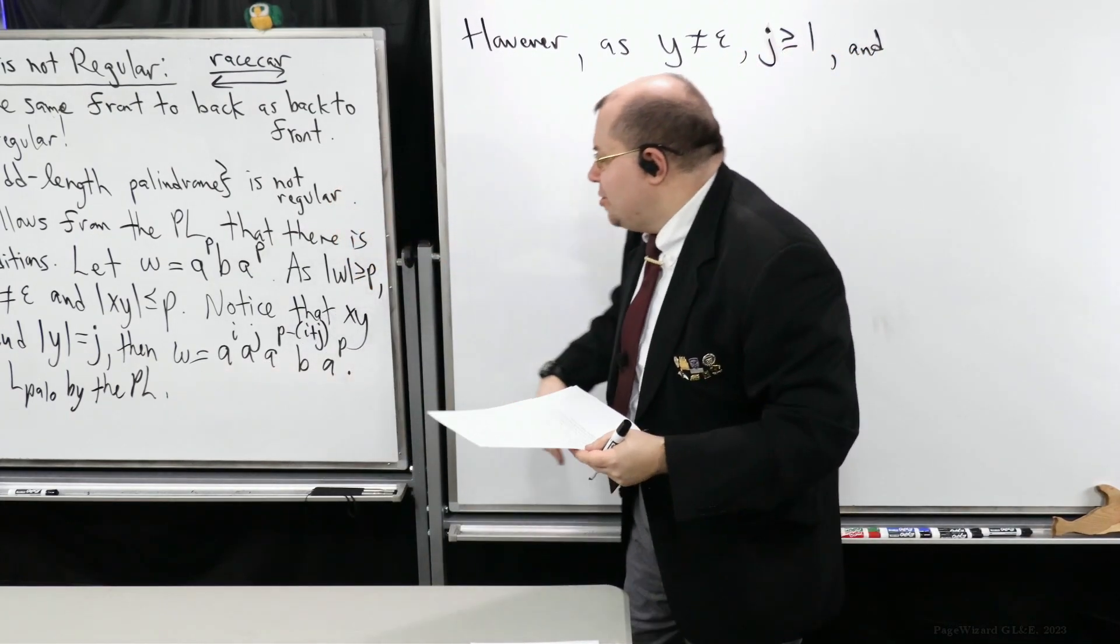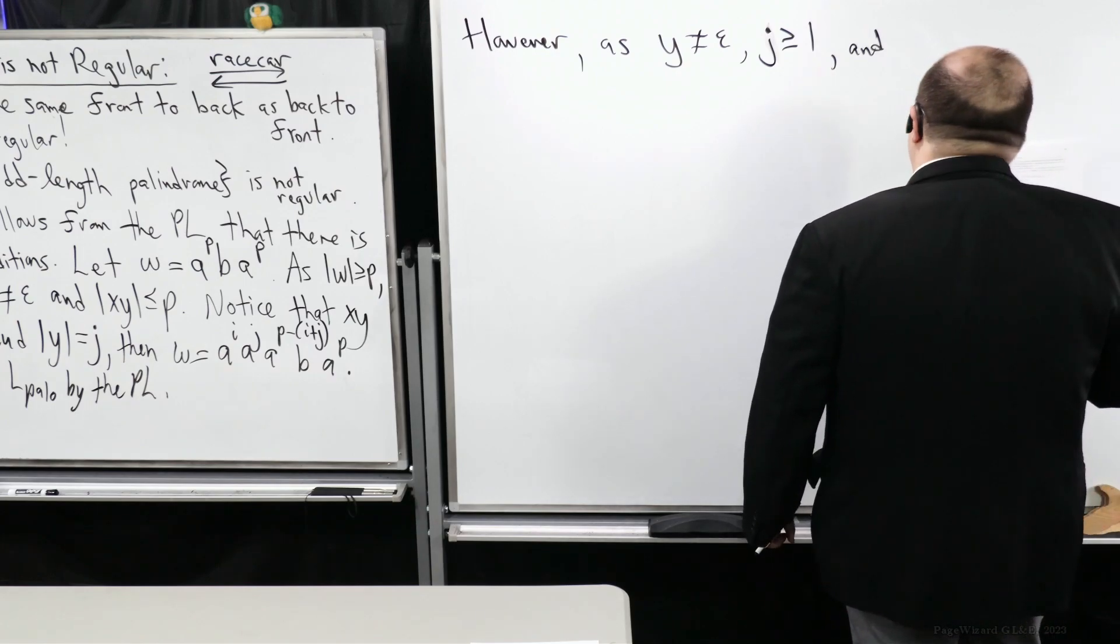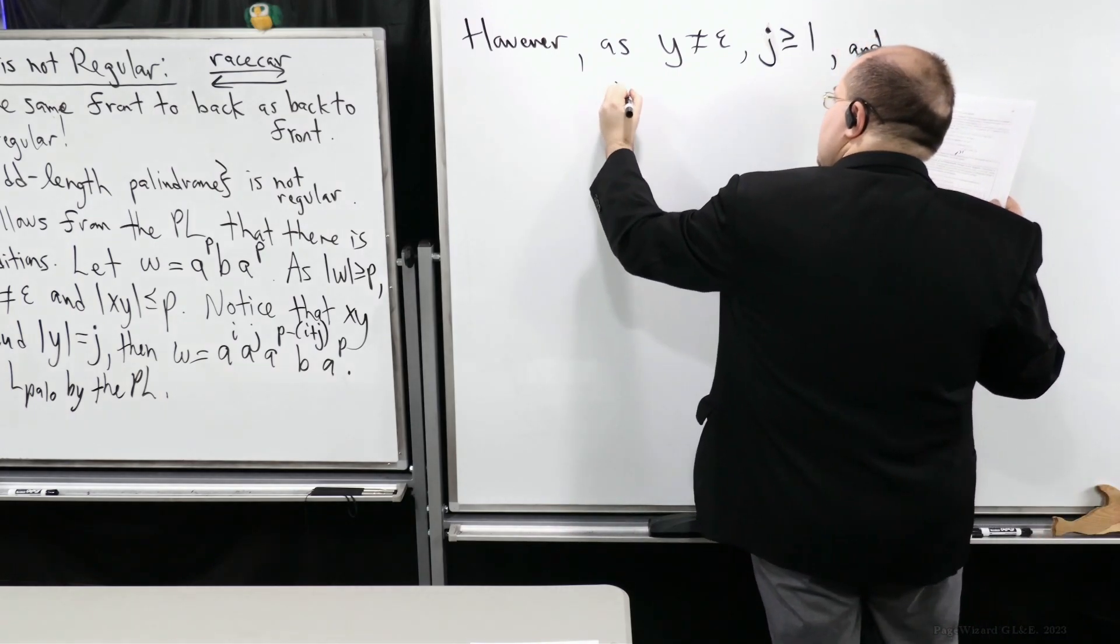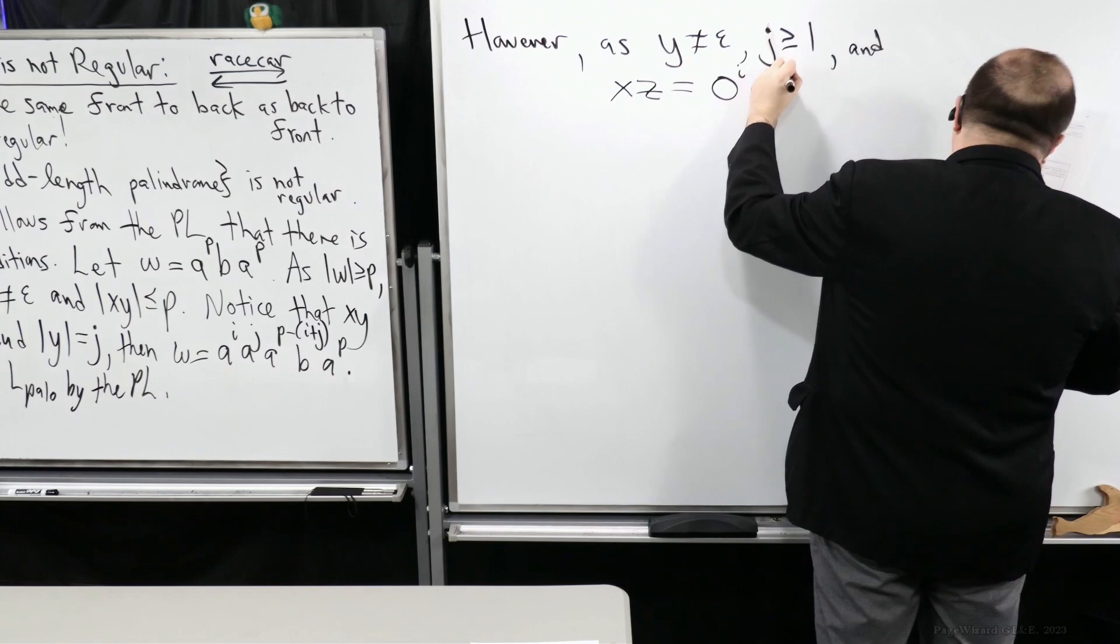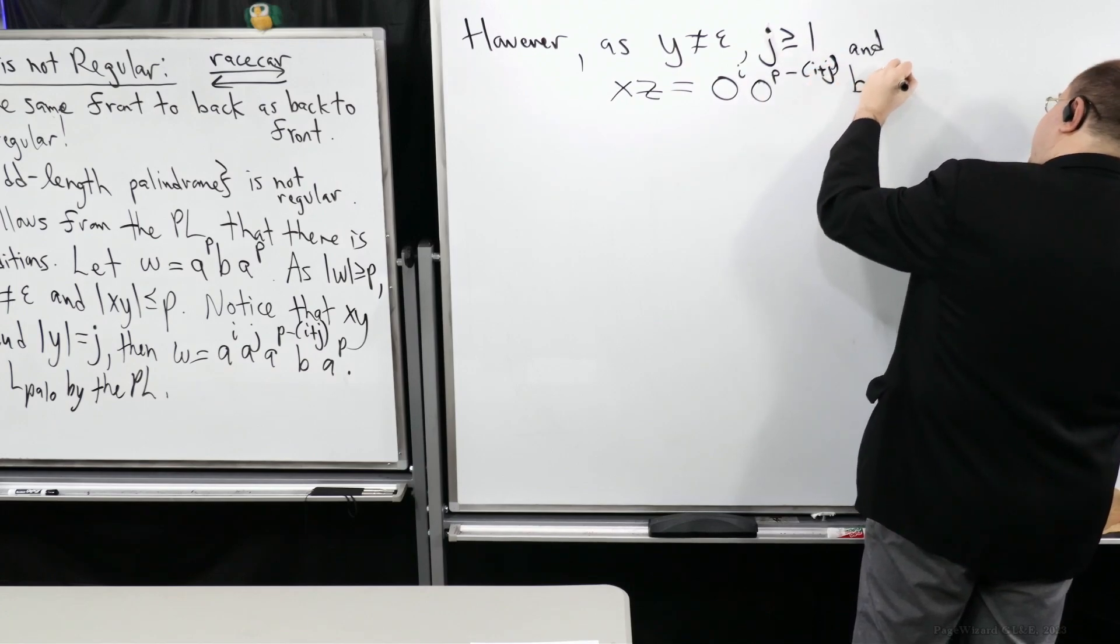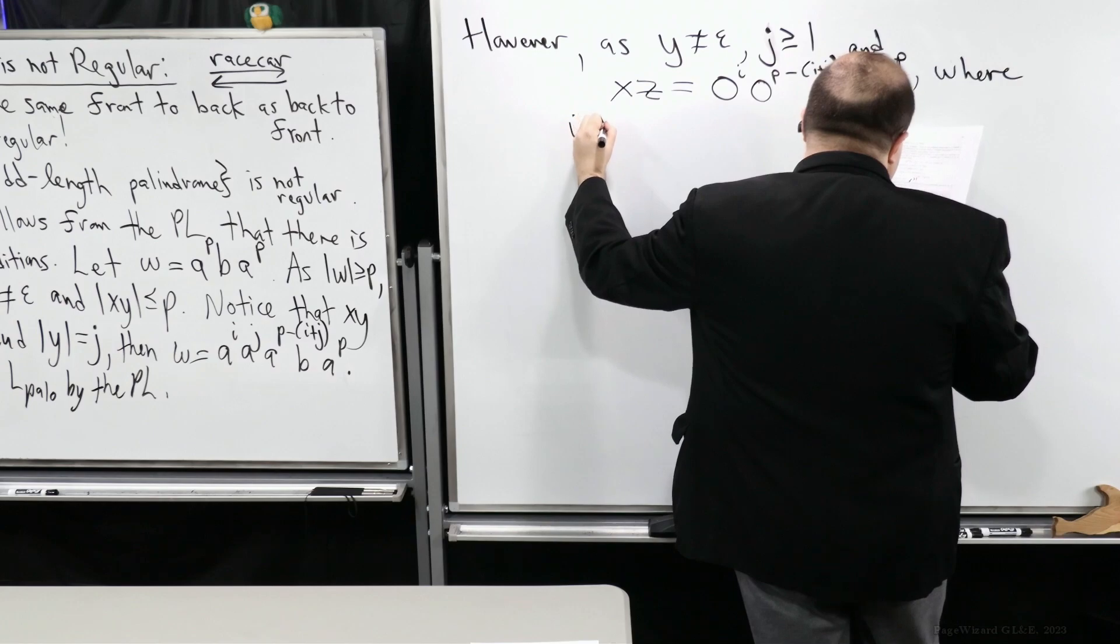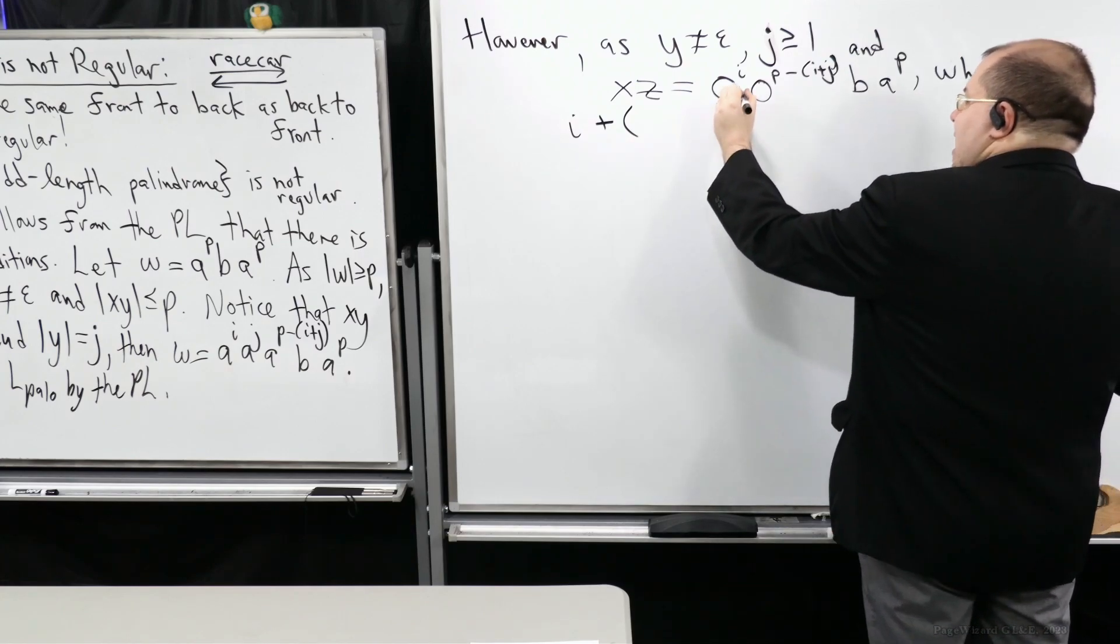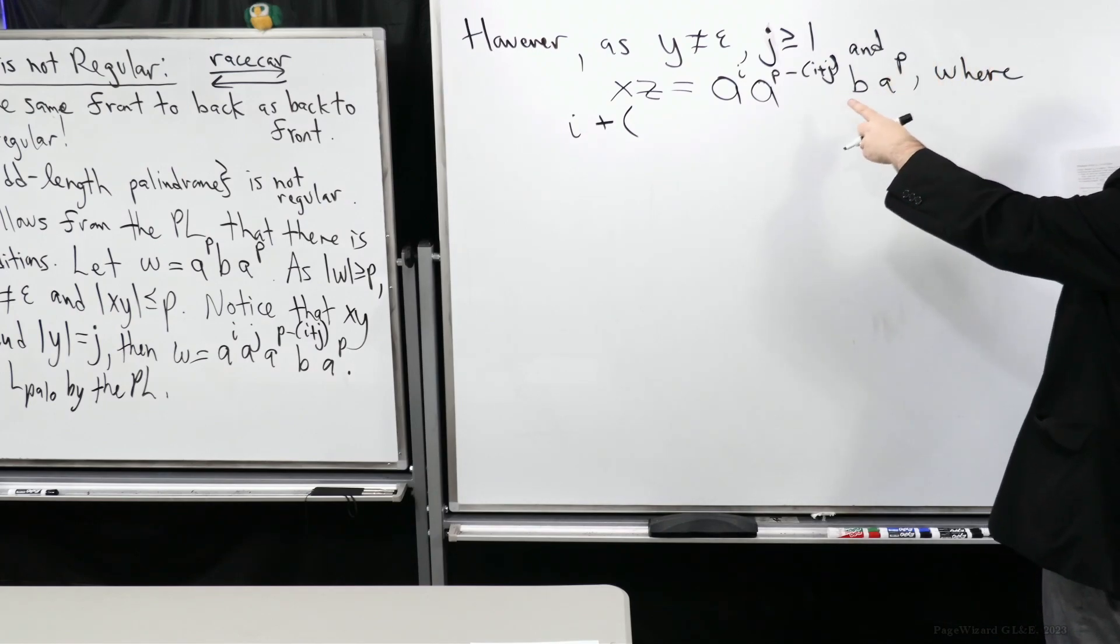And now what I'm going to do is, because now I know that j is at least 1, I'm just going to write out what X, Z looks like when I take that form and I just pull out what that j component is. So, X, Z is equal to A to the i, A to the P minus i plus j, B, A to the P, where we have, so how many A's are there?